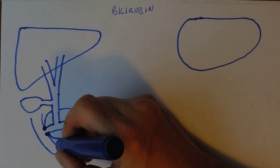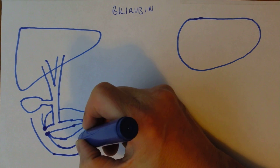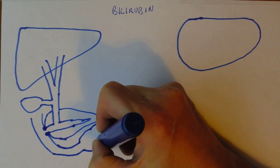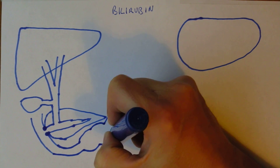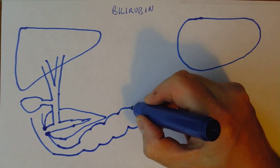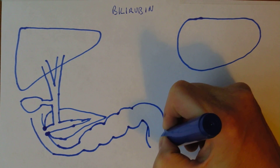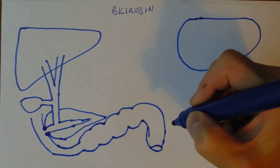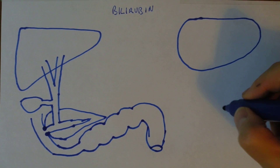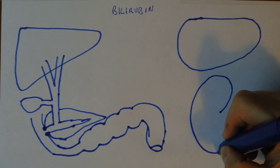The small intestine carries on — duodenum, ileum — and then eventually it becomes the large intestine. Here we have a stretch of large intestine ending of course in the rectum and the anus. The other part we're going to need to tell the story is the kidney, one of two.